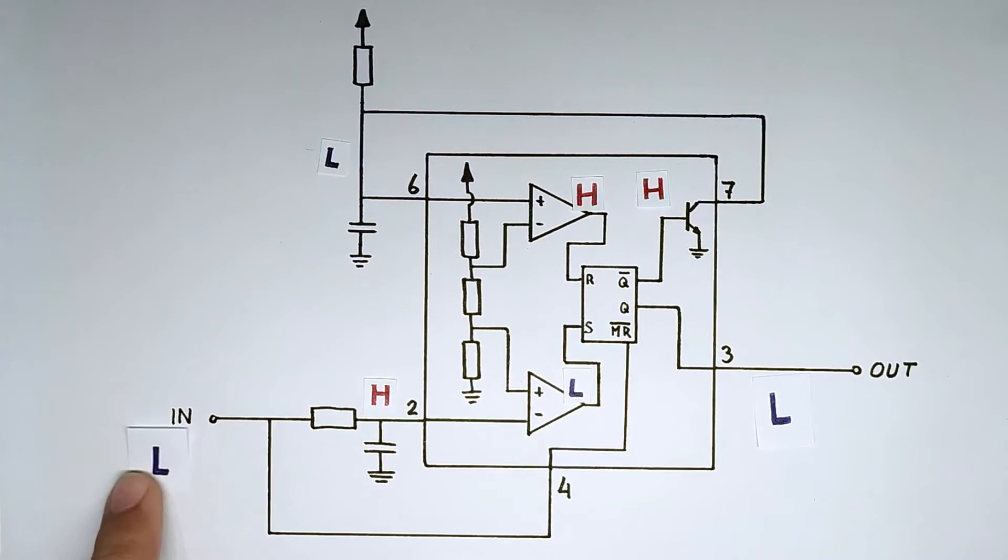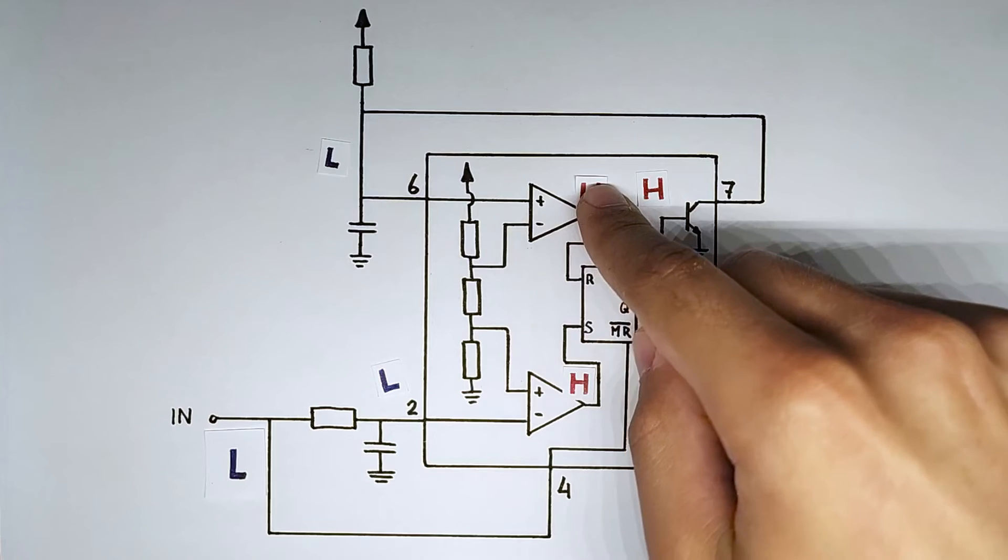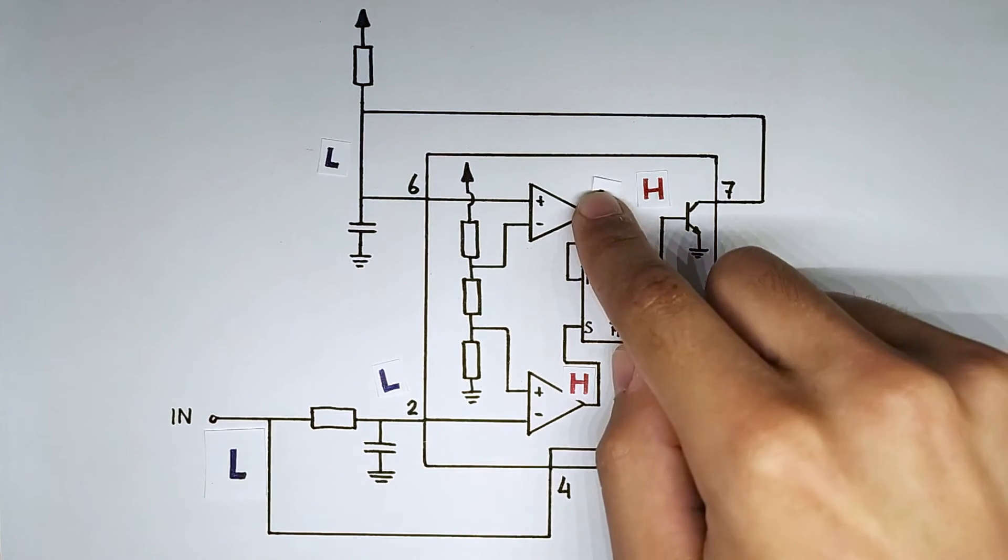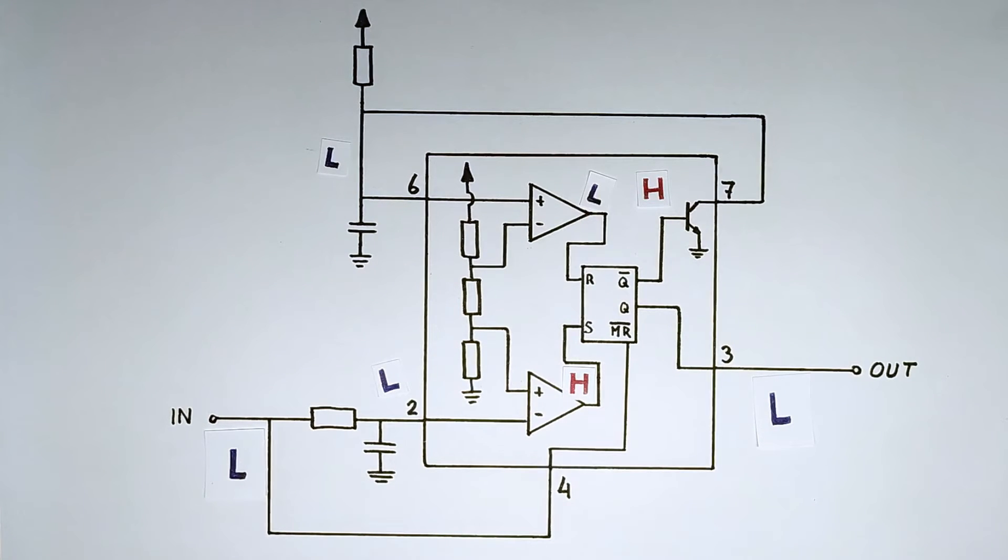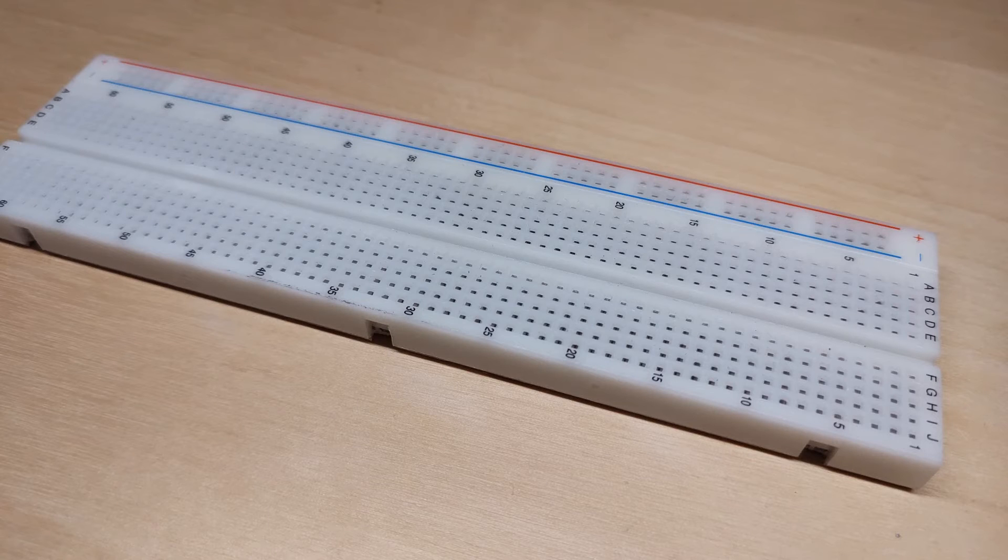Because the input here, the set becomes back high and it's overridden by master reset which keeps the output low. At this point, this is also low, this point everything is like it was in the beginning and the circuit is ready to get re-triggered.